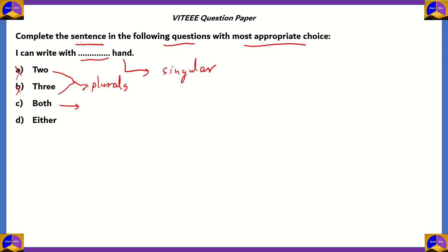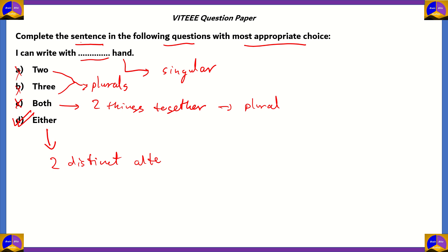Option C says 'both.' The term 'both' usually means two things acting together — using both your left and right hand simultaneously — which leads to a plural sense, while the noun 'hand' is singular. So option C is also incorrect. The right option is D: 'either.' When we use 'either' as a modifier, you have two distinct alternatives to choose from. There's also 'every,' used for more than two alternatives, but 'either' is for exactly two. Since most people have a left and right hand, you can write with either hand — using 'either' with the singular form works. So option D is correct.